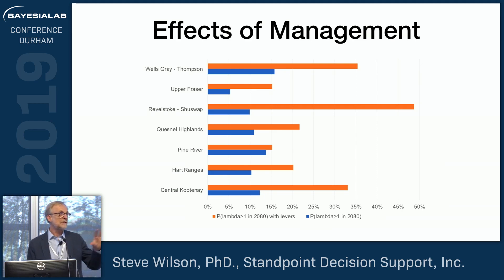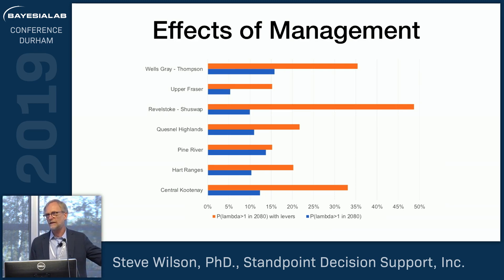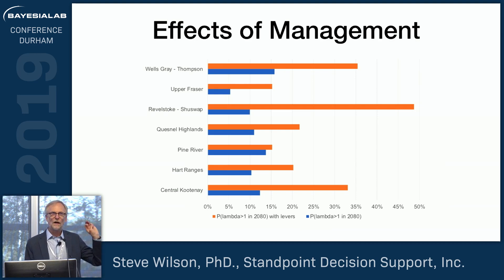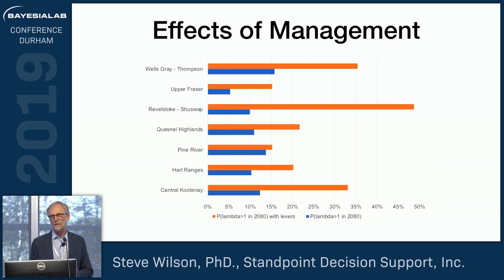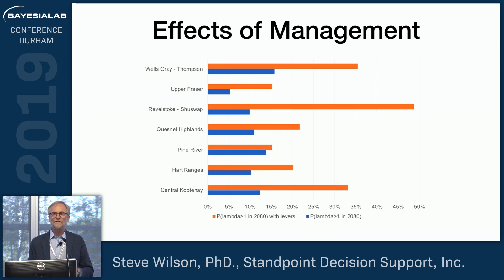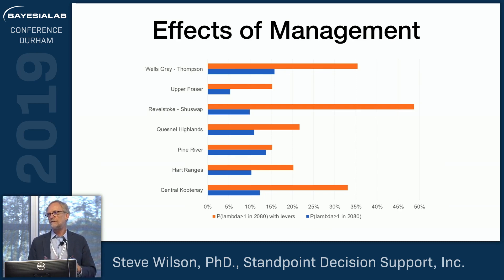These are key findings that are going to influence our policy around where we think we can recover caribou, what management actions we can put on the ground, and what our opinion is about the probability that we're going to be successful in generating a positive population response. I don't think we could do this unless we had the foundation of expert opinion baked into our models using a Bayesian network, because we simply don't have the data to develop a fully parametrized model in any sort of reliable way.